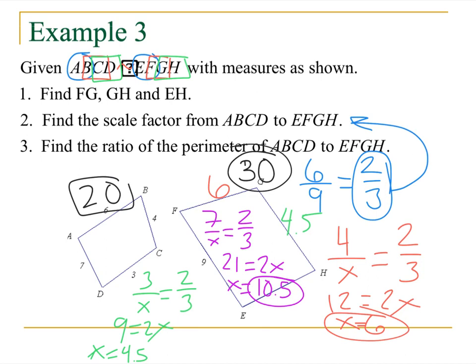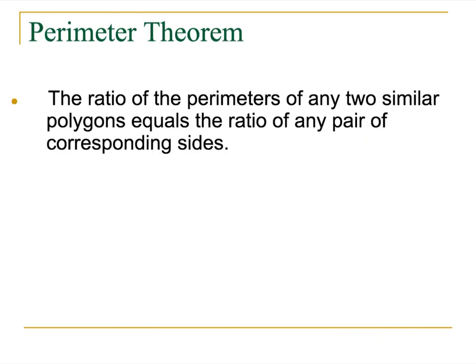Heck, yeah, it does. Woo! Awesome. America, freedom, rock and roll. So, when I find that ratio of the perimeter, 20 over 30 reduces two to three. It's the same as the scale factor. So, formally, let's write that bad boy down. The ratio of the perimeters of any two similar polygons equals the ratio of any pair of corresponding sides. Woo! Awesome.